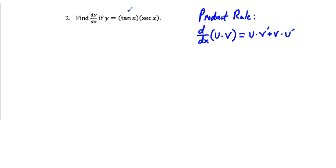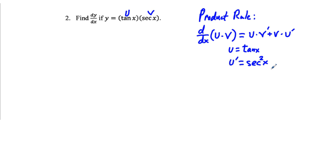Applying the product rule, let's identify u and v. We'll call u = tan x, so u prime equals secant squared x. One of our students had a Nicki Minaj-related mnemonic — a little device to help remember things, a bit of humor in the classroom. Next, v = secant x, and v prime equals secant x tangent x.